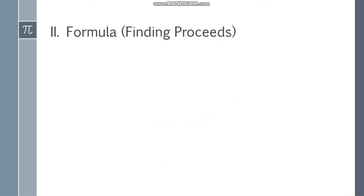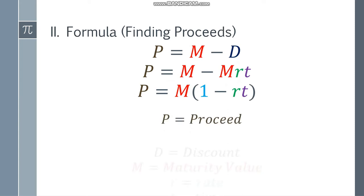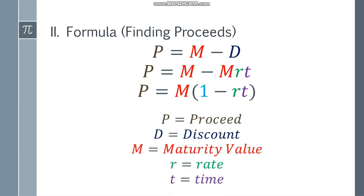Next is the formula for finding proceeds. When you have the discount, you can use P equals M minus D. Or if you don't have the discount, you can use P equals M minus MRT, or P equals M times the quantity one minus RT. P is the proceeds, D is the discount, M is the maturity value, R is the rate, and T is time.